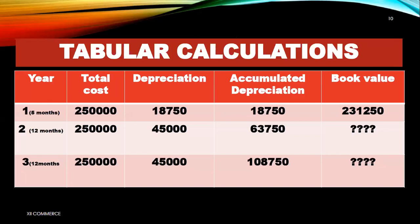Now we will solve questions together using the straight line method, whether it is a class assignment or home assignment. When using the straight line method, you do tabular calculations. There are five boxes in the tabular calculation table: the first is for year, second for total cost, third for depreciation, fourth for accumulated depreciation, and fifth for book value.